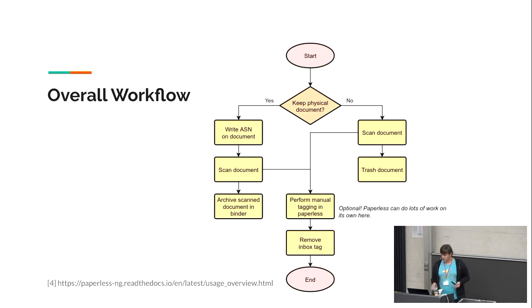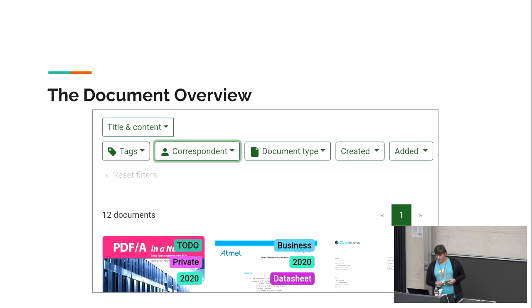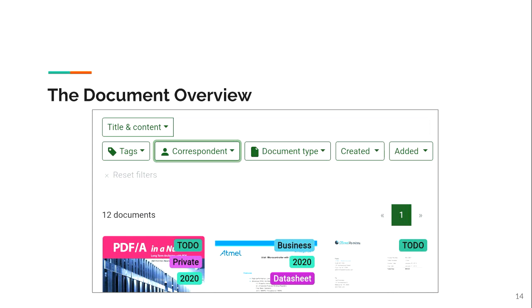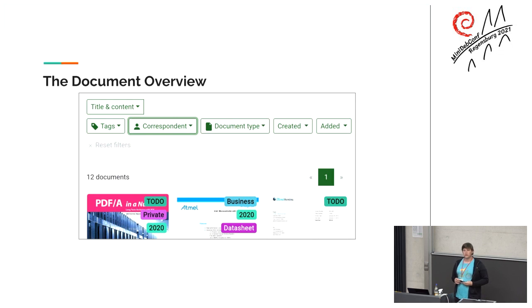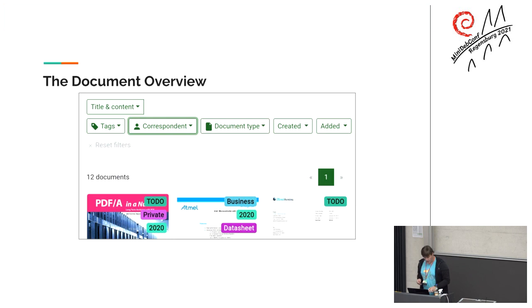After tagging you remove the inbox tag and you're done. In the document view you can see the tags listed — for example, the first document is about PDF/A, tagged 'to-do', 'private', and '2020'. There's an Atmel data sheet stored under 'data sheet' and '2020' for business. On the left is an invoice still in 'to-do'. You can also search directly within the text — for example, if it's an invoice for a watch, you can search for 'watch' and get the invoice.